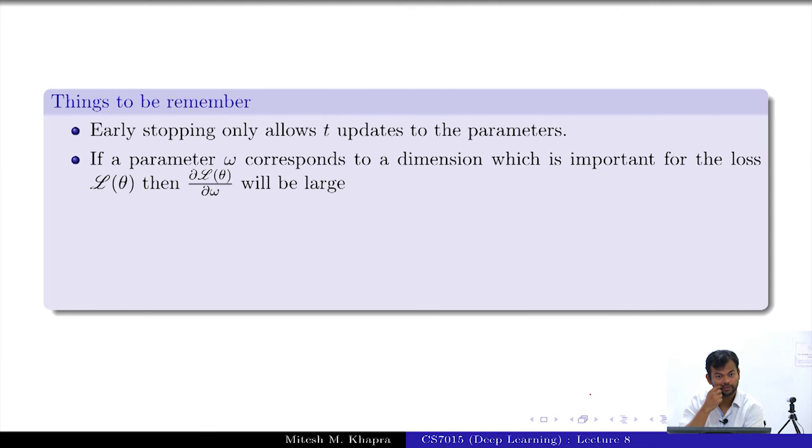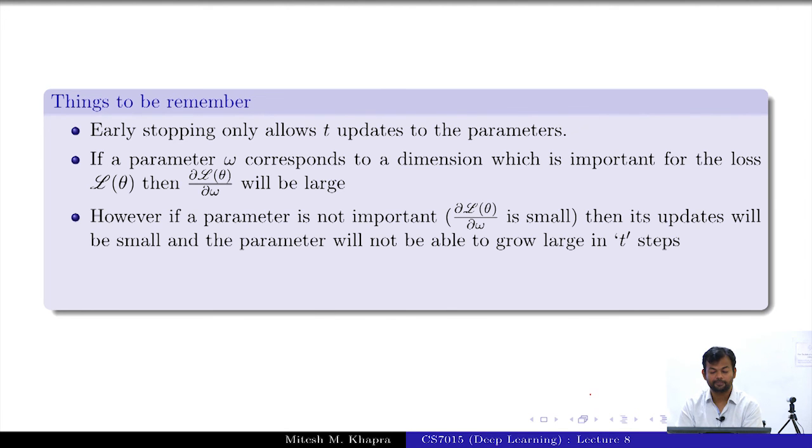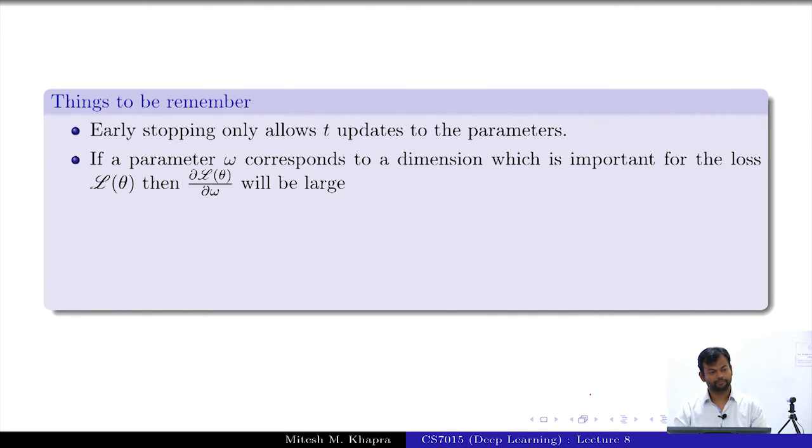That means this gradient would be large. And if a parameter corresponds to a feature which is not important, what would this derivative be? Small. Now what is the net effect of this? You have some parameters which are important, so the derivatives are large. Some parameters which are not important, so the derivatives are going to be small, and you are going to only allow T updates. So what is going to happen? The parameters which are important will end up getting effectively more updates, because each of these magnitudes was higher and you did T of those. The parameters which are not important will end up getting effectively lesser movement, because each of these gradients was small and you did only T of those. So you again see this that it is a weird way of ensuring that your important parameters get more updates than your non-important parameters. So it is very important to see these connections between these different regularization methods. All of you are fine with this?